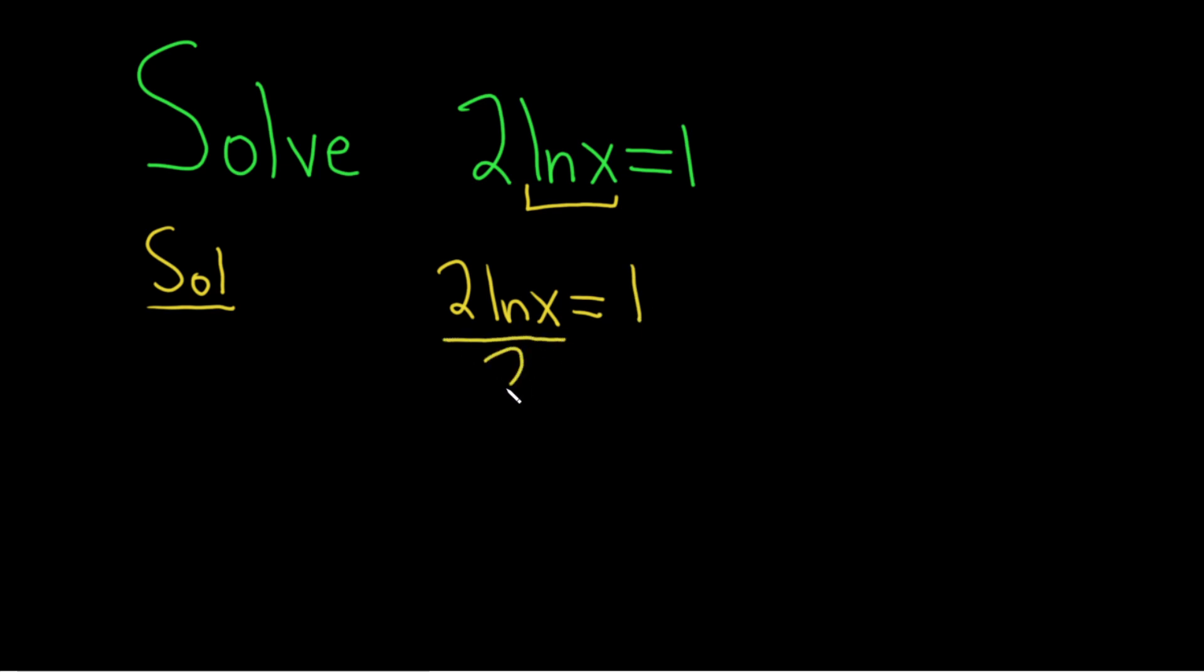So divide the left-hand side by 2. Divide the right-hand side by 2. The 2's cancel, so we have the natural log of x equal to 1 over 2.